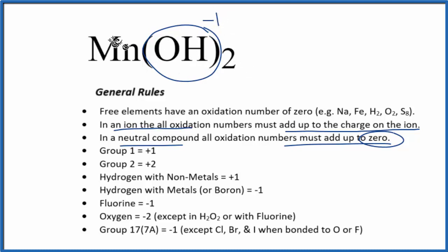Since we have two of them, that means that this is going to have to be two plus in order for all of this to add up to zero. Two times minus one is minus two. Plus two, we get the zero.